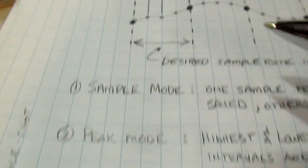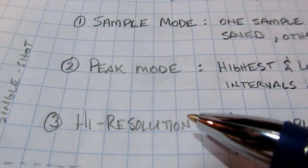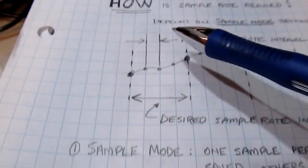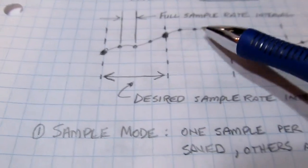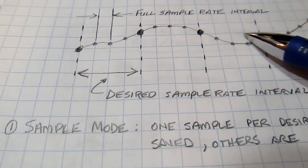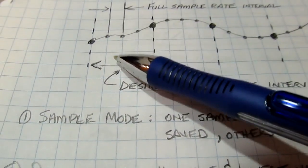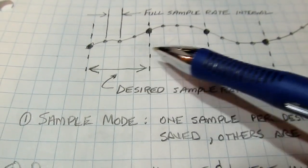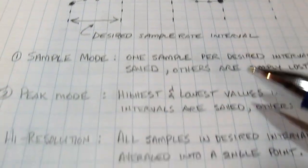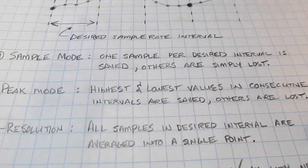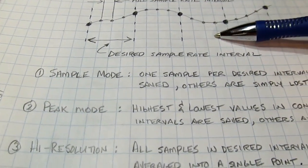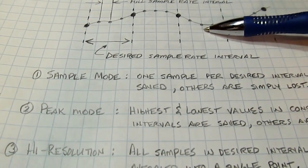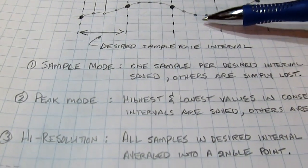Another interesting way of reducing the sample rate is high resolution mode. What high resolution mode does is take all of the samples that occur in each desired sample interval and average them together to a single point. The result of averaging those points to a single point is essentially a low-pass filter effect, giving some enhanced vertical resolution.